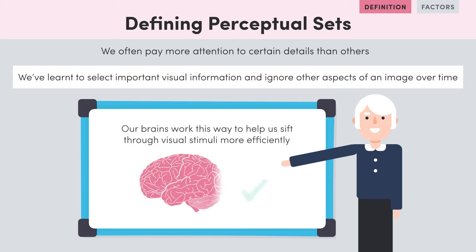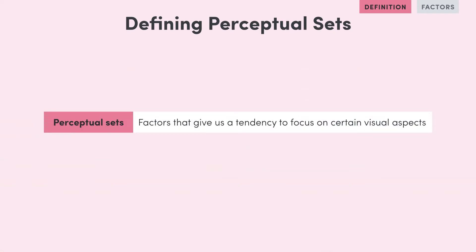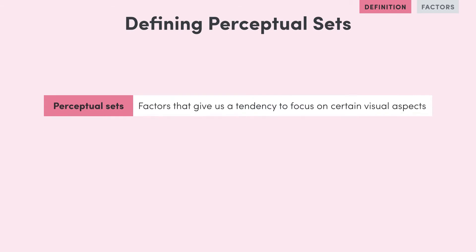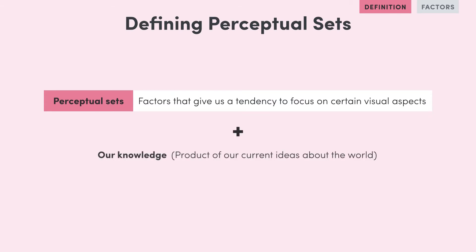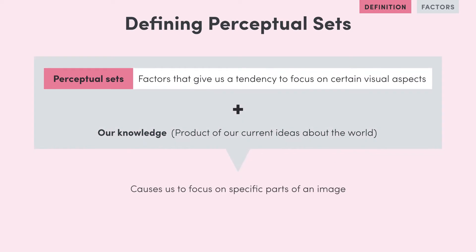The reason our brains work this way is to help us sift through visual stimuli more efficiently. This idea leads us on to the definition of a perceptual set, which consists of factors that give us a tendency to focus on certain visual aspects. Our knowledge, which is the product of our current ideas about the world, also causes us to focus on specific parts of an image.